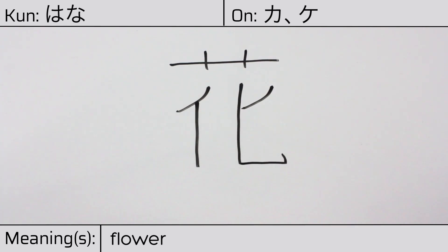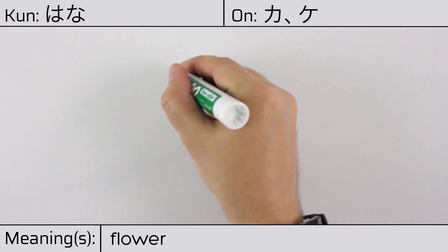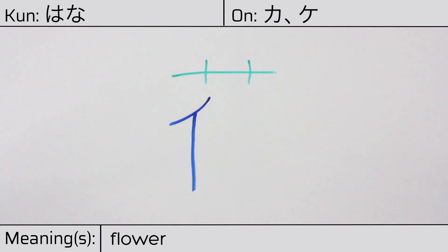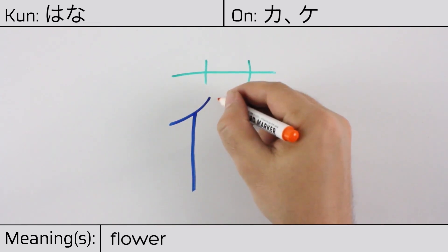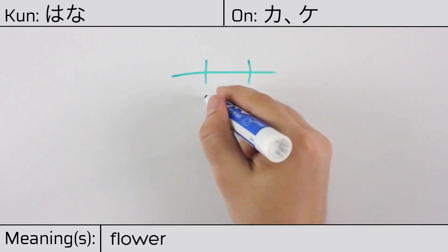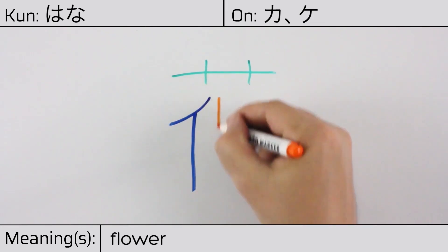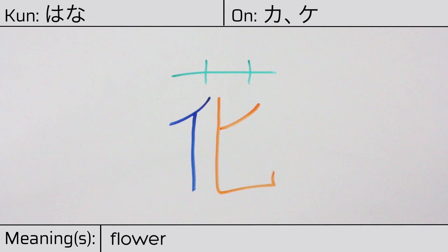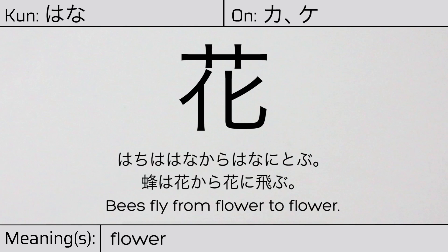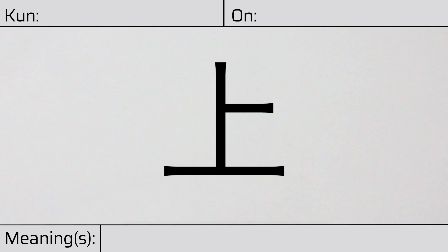This character is made up of the following radicals or parts: grass at the top, the stylized version of hito or person known as ninben on the left, and the spoon radical or saji on the right. The bottom half of this character means change. You can remember this kanji by the following hint: the part of a plant that changes most conspicuously. Our example sentence is: Hachi wa hana kara hana ni tobu — Bees fly from flower to flower.